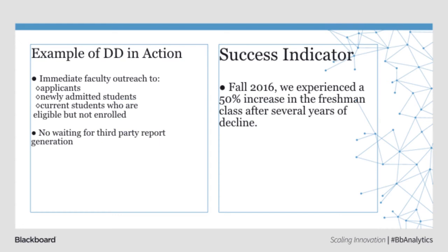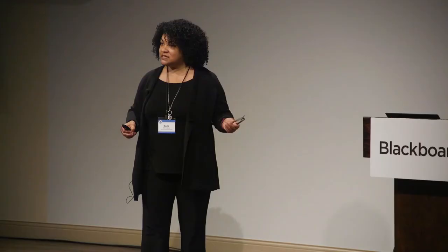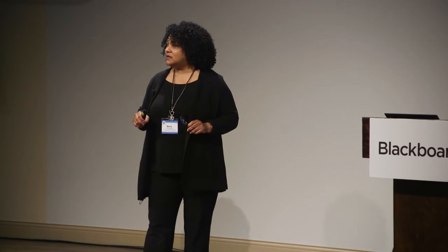An example of this in action: we now have immediate faculty outreach to students — potentially returning students who are eligible to enroll but not enrolled, newly admitted students, and applicants. No more waiting for an approval, and no more waiting for someone in the IR office to generate a report. You log on, drill down, and if you're a faculty member with applicants, newly admitted students, or non-returning students you want to reach, you can immediately contact that student.